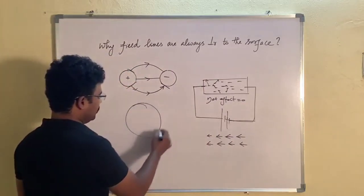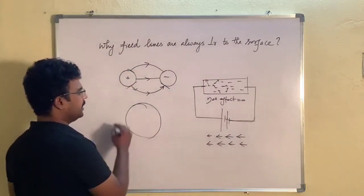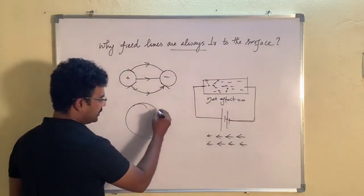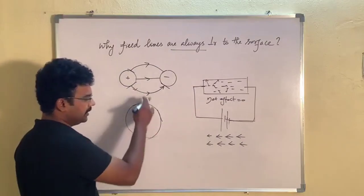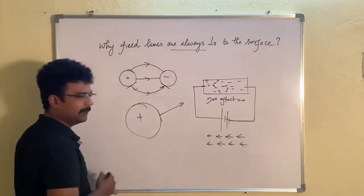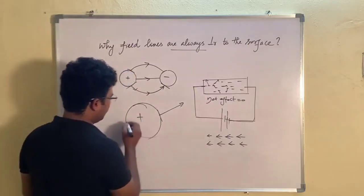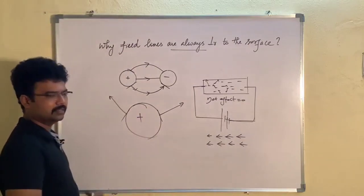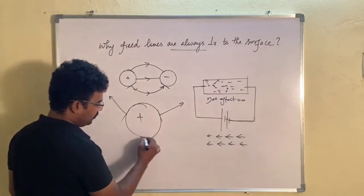This is one conductor we will assume. Suppose we assume the electric field is not perpendicular. Imagine if the field is out of normal. This is a field and that field is out of normal.